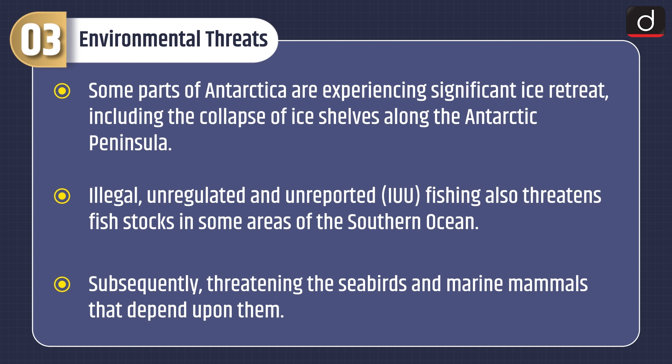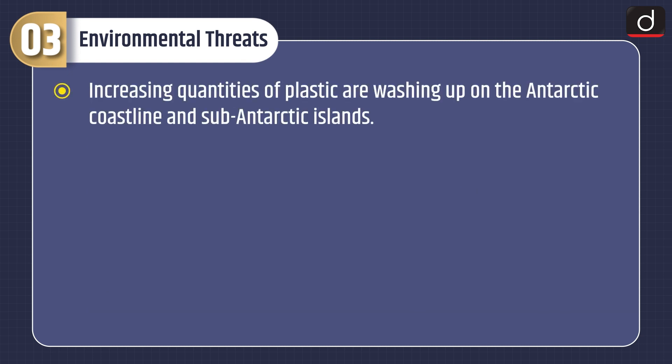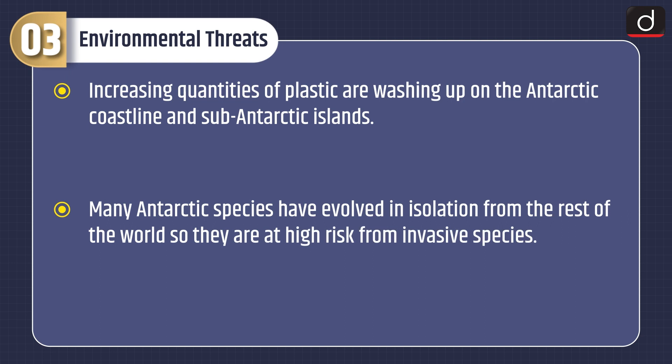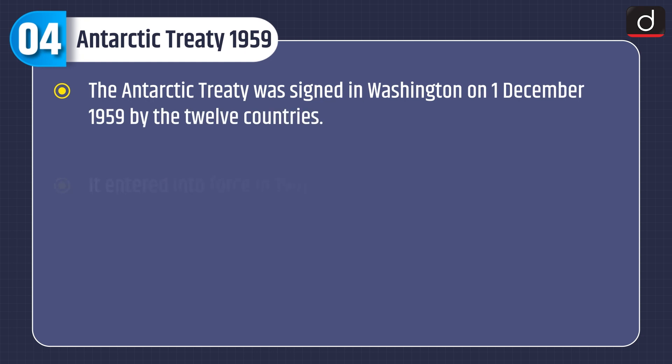Illegal, unreported, and unregulated (IUU) fishing threatens fish stocks in some areas of the Southern Ocean, subsequently threatening the seabirds and marine mammals that depend upon them. Increasing quantities of plastic are washing up on the Antarctic coastline and sub-Antarctic islands. Many Antarctic species have evolved in isolation, putting them at high risk from invasive species.